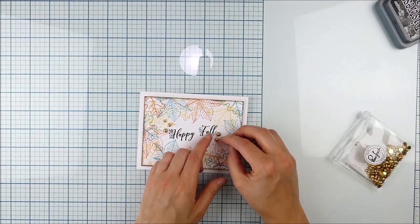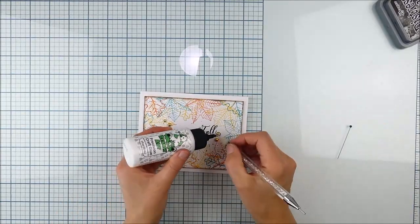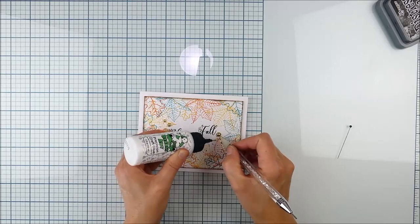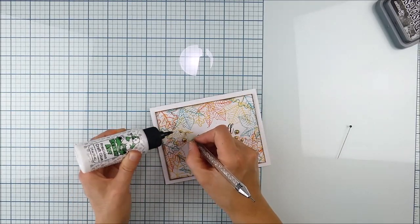All right, final touch is some metallic gold pearls. These are from Pinkfresh Studio. They're just going to add a little more sparkle and shine and I tuck those around the two sides of the sentiment for that little touch of dimension and sparkle.